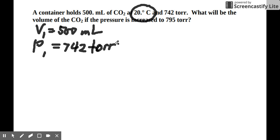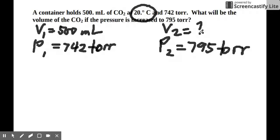And the final pressure, it says there, because it is increased, it became 795 torr. So therefore, it's obvious that you're asked for V2. So because it's pressure and volume, obviously, this is a Boyle's Law problem.